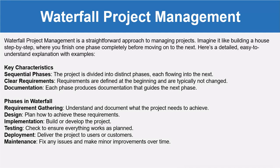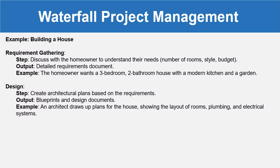Let's take an example of building a house. The first phase is requirement gathering — we discuss with the homeowner to understand their needs: how many rooms are required, what style, budget, etc. The output is a detailed requirement document. For example, the homeowner wants a three-bedroom, two-bathroom house with a modern kitchen and a garden. Then the design phase comes, where we create architectural plans based on the requirements. The output is a blueprint and a functional specification document — for example, an architect draws plans showing the layout of rooms, plumbing, and electrical systems.